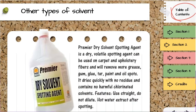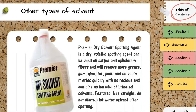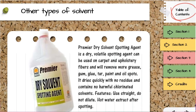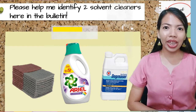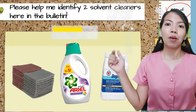Another type of solvent is the dry solvent. The Primer dry solvent spotting agent is a dry, volatile spotting agent that can be used on carpet and upholstery fibers and will remove grease, gum, glue, tar, paint, and oil spots. It dries quickly with no residue and contains no harmful chlorinated solvents. To use it, apply it straight with no need to dilute it with water, and hot water extract after spotting. Can you help me identify two solvent cleaners shown here in the bulletin?